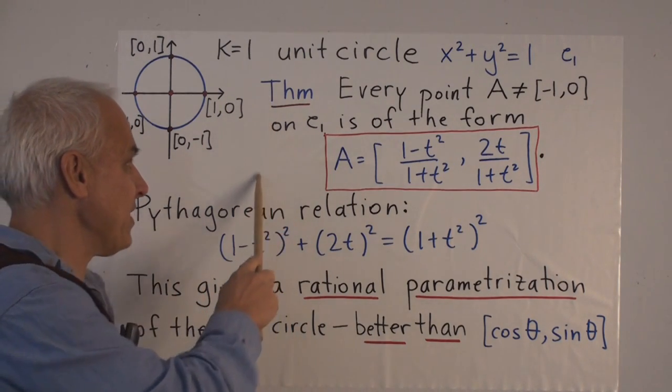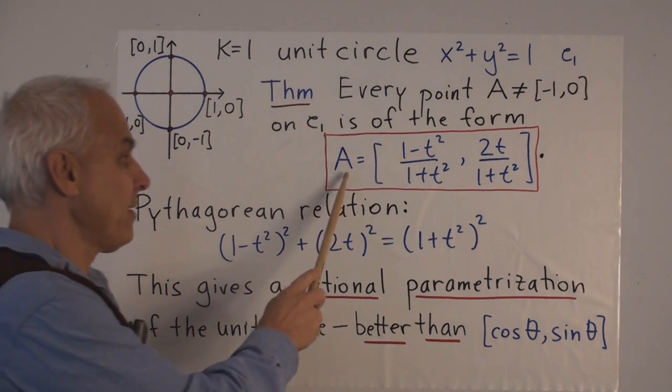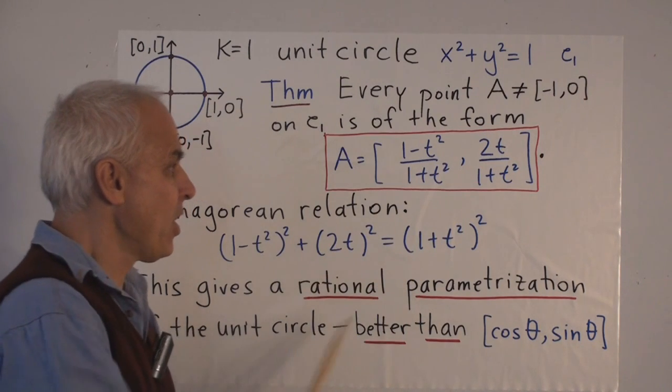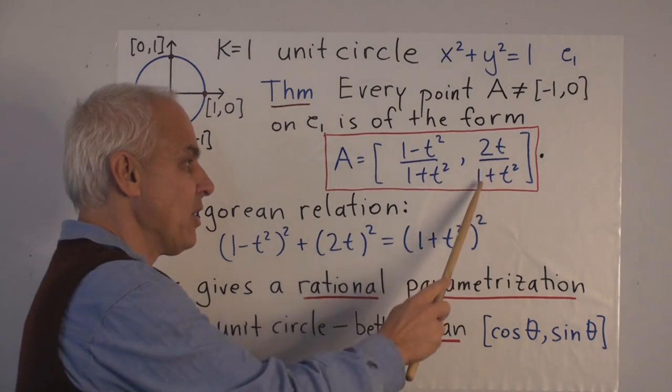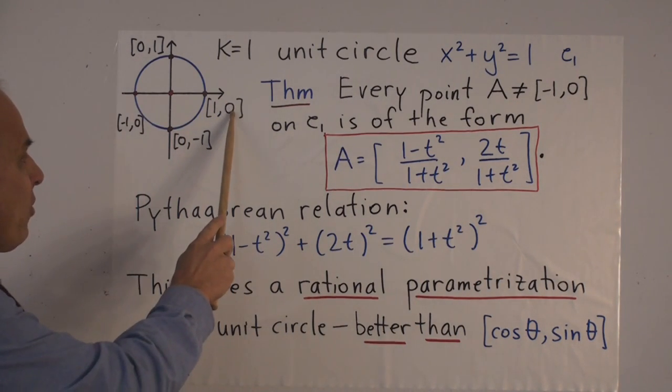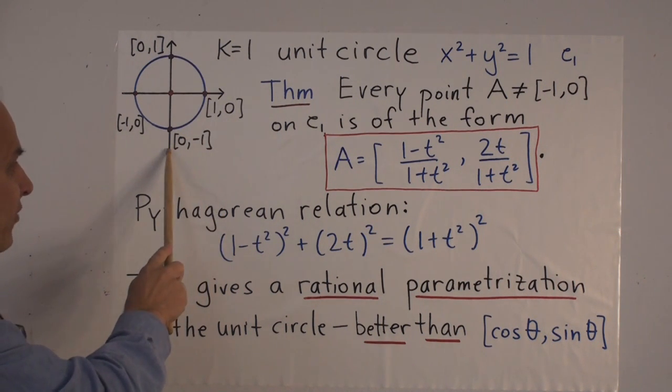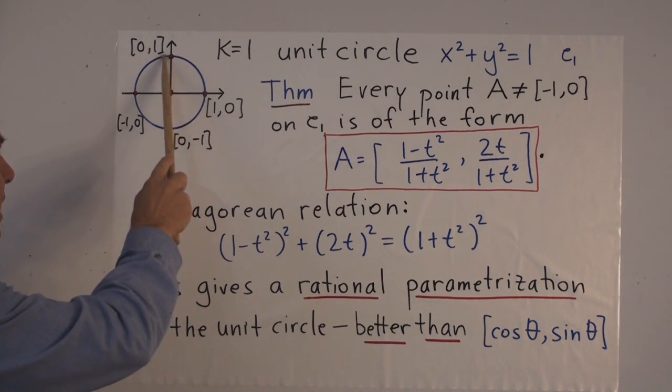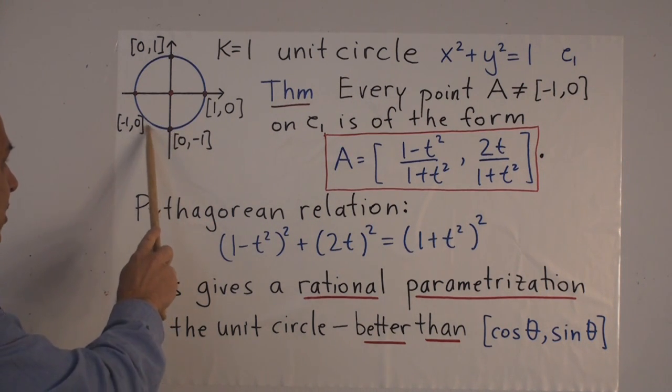Which is captured by this theorem: every point on this circle, with the exception of (-1,0), can be written in this following form: [(1-t²)/(1+t²), 2t/(1+t²)]. When t is zero, we're here. When t is one, we are here. When t is minus one, we are here. And as t gets bigger and bigger, we approach this point. When t becomes a bigger and bigger negative number, we approach this point from the opposite direction.